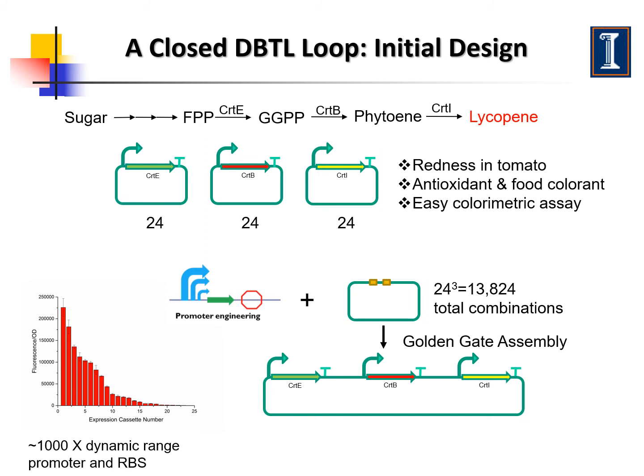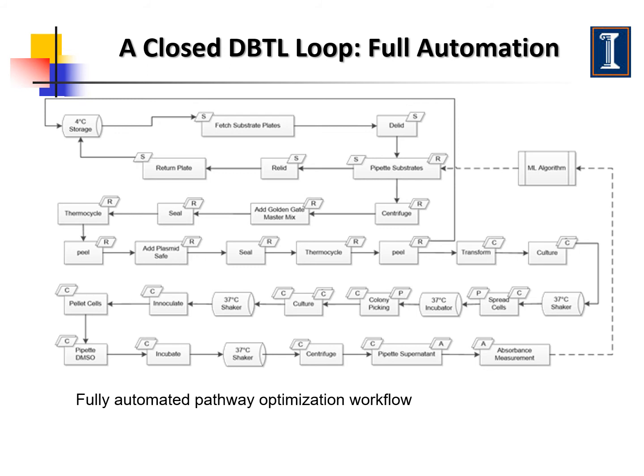As a proof of concept, we attempted to use Bioautomata to improve the efficiency of a three-gene pathway involved in the synthesis of lycopene, which is a food colorant. For each pathway gene, we used 24 promoters with varying strengths, so the total number of combinations is 13,824 possible pathway variants. To construct and characterize these pathway variants, we developed a fully automated workflow.